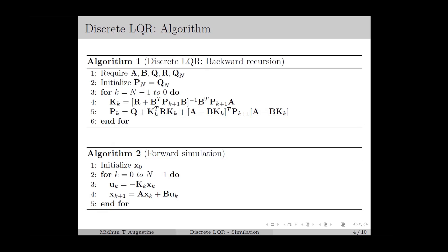Let's recall the discrete LQR algorithm from lecture number 5. The main part of the algorithm consists of a backward recursion, in which we start from the end of the time horizon, and we initialize the terminal Riccati matrix P_N as the terminal weight matrix Q_N. Then we go backwards in time, and for each k from N-1 to 0, we compute the feedback gain using this equation, and the Riccati matrix using the Differential Riccati Equation, or the DRE.